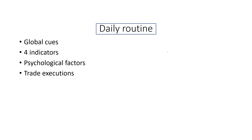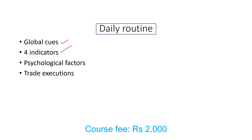Here we are going to look at the daily routine. First, we are going to look at the global cues, because we are going to start in the market. If we start the market, we are going to look at the U-turn disc and global cues. Next, focus on only 4 indicators maximum — we are going to look at only 3 to 4 indicators.